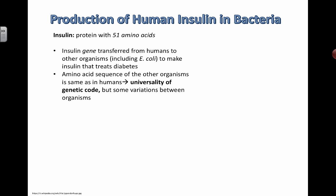The reason we can do this is because of something called the universality of the genetic code — a fancy way of saying that all living organisms use the same genetic code. This is very cool, and it means we can actually transfer genes between all different types of species.